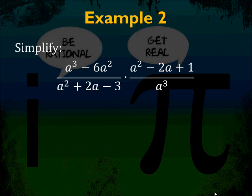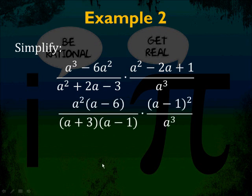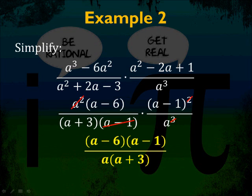Example two — you'll need to factor here. You have a cubed minus 6a squared over a squared plus 2a minus 3, times a squared minus 2a plus 1 all over a cubed. Factor everything: you get a squared times (a minus 6) times (a minus 1) squared all over (a plus 3)(a minus 1) times a cubed. Cancel: the a cubed on bottom becomes a after a squared on top factors out, and one (a minus 1) cancels. The answer is (a minus 6)(a minus 1) all over a(a plus 3). Factor, cancel common factors, then combine.